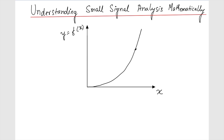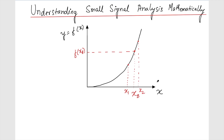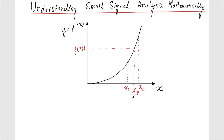Let's consider one point on the curve. On the x-axis the value is called xp, and on the y-axis it is f(xp). Now suppose I have two points x1 and x2, where x2 is very near to xp, and correspondingly I'll have f(x1) and f(x2).